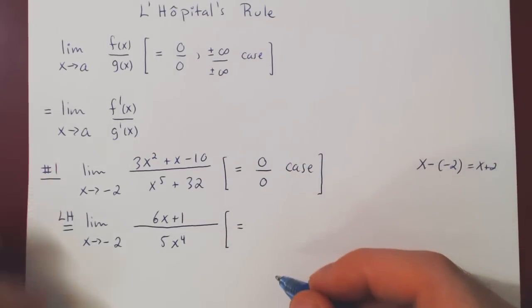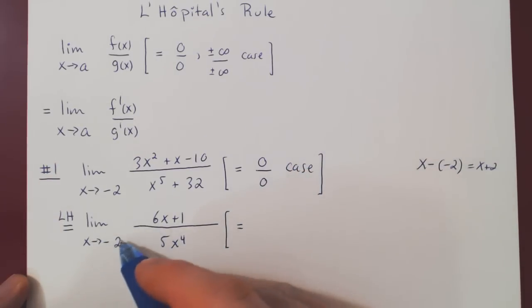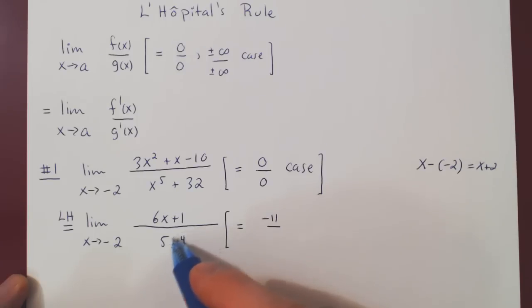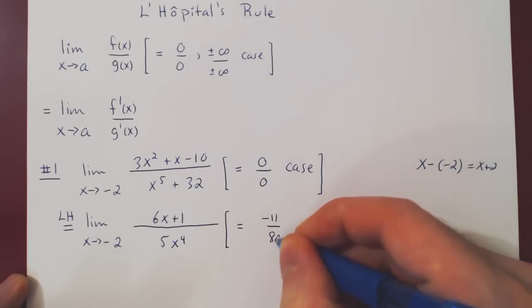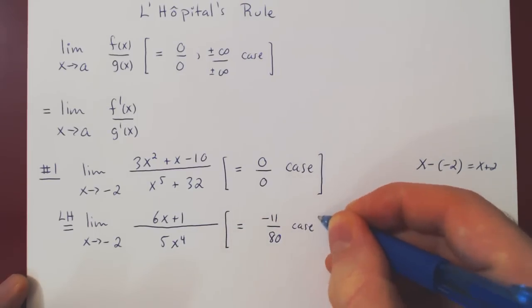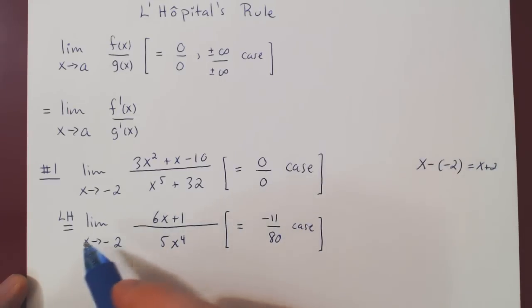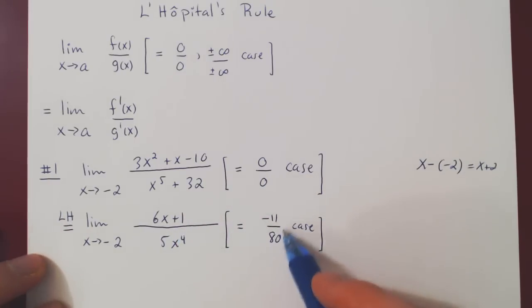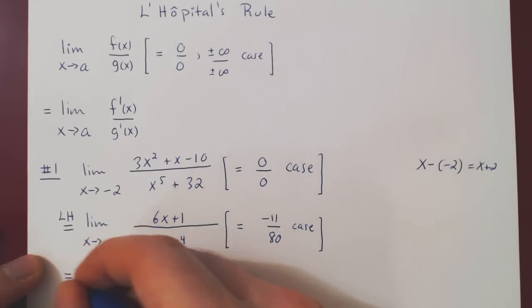And now we look at our case again. As x goes to negative 2, this goes to negative 12 plus 1, negative 11, over negative 2 to the 4 is 16, 5 times 16 is 80. And now what we're saying is as x approaches negative 2, our fraction is getting closer and closer to negative 11 over 80, so there's nothing wrong here, and that is our final answer.